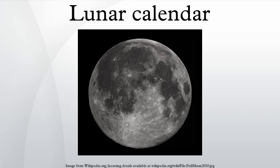Most calendars referred to as lunar calendars are in fact lunisolar calendars. That is, months reflect the lunar cycle, but intercalary months are added to bring the calendar year into synchronization with the solar year. Some examples are the Chinese and Hindu calendars. Some other calendar systems used in antiquity were also lunisolar.